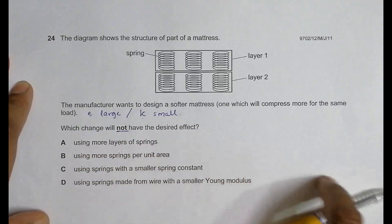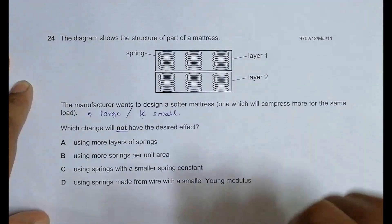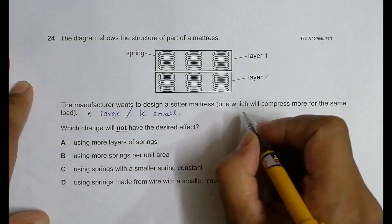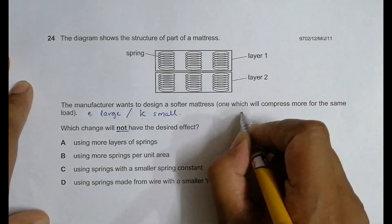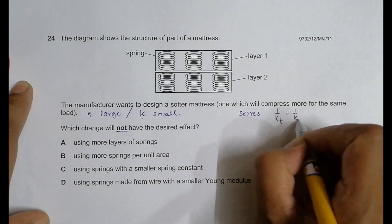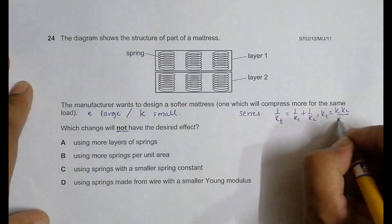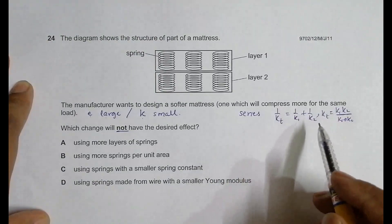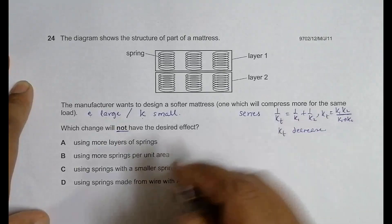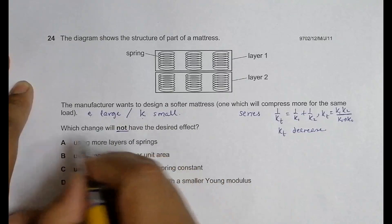Option A: using more layers of springs means adding arrangements here. Since the load applies from here, these arrangements will be in series. In a series arrangement, 1/k_total = 1/k1 + 1/k2, which gives k_total = k1*k2/(k1+k2). In series, k_t decreases, so k_t decreases means E will be large and the mattress will be softer. This is not the correct answer.